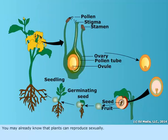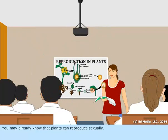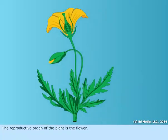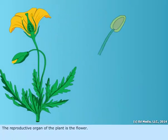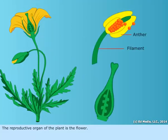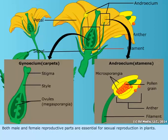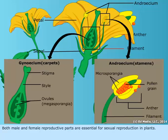You may already know that plants can reproduce sexually. The reproductive organ of the plant is the flower. Both male and female reproductive parts are essential for sexual reproduction in plants.